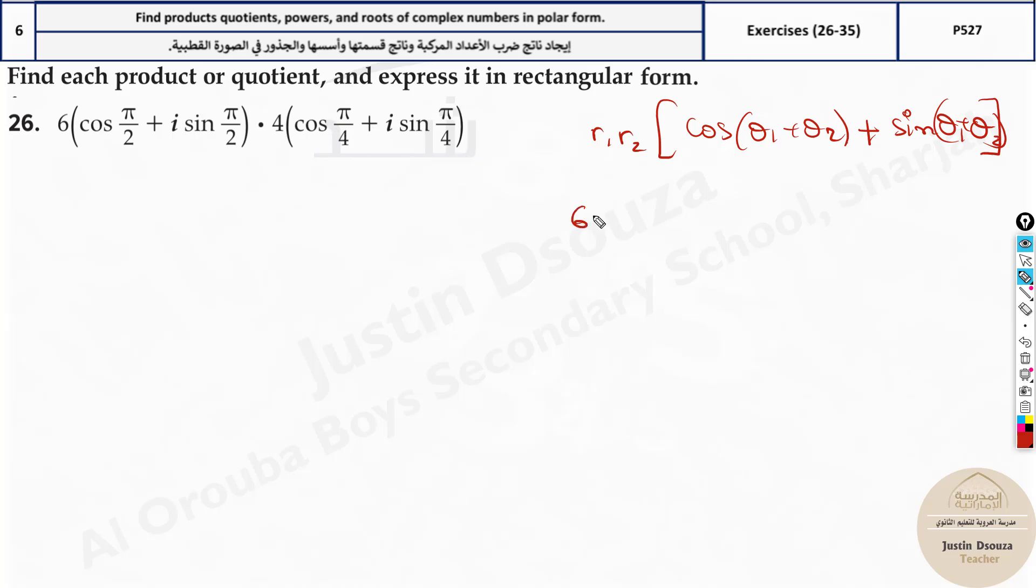Now here it will be 6 times 4, that's 24. And it will be cos(π/2 + π/4), and we will have plus i sine. Okay I forgot to write the i. i sine again π/2 plus π/4. And that's the answer. So here it will be 24, and we have cos. Now this is half π, this is one-fourth, it will be three-fourths π. You can directly write it: 3π/4 plus i sin(3π/4). This is the polar form.